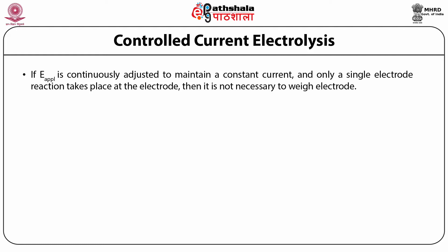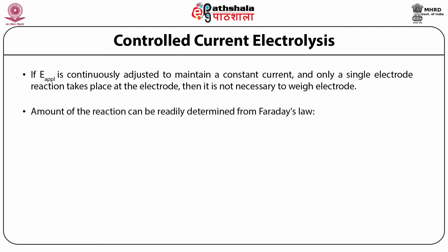If E applied is continuously adjusted to maintain a constant current, and if conditions are such that only a single electrode reaction takes place at the electrode with 100% current efficiency, then it is not necessary to weigh the electrode. The amount of reaction can be readily determined from Faraday's law: F times equivalents reacted equals I times T, where T is the time in seconds and F is 96,493 coulombs per equivalent — Faraday's constant.